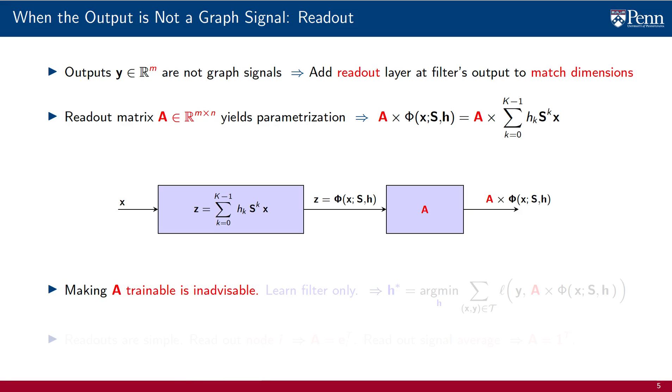While it is possible to make the readout layer a trainable parameter, this is in general inadvisable. It is more advisable to simply choose a suitable readout matrix and train the graph filter only.